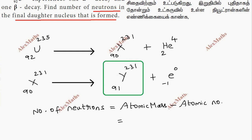Atomic mass of the final nucleus is 231, and atomic number is 91. Therefore, the number of neutrons is 231 minus 91, which equals 140.